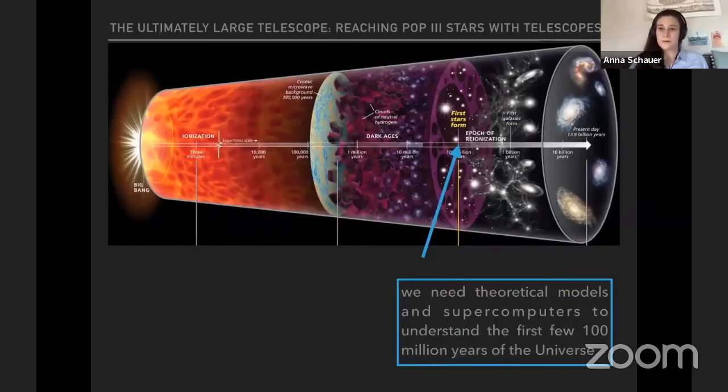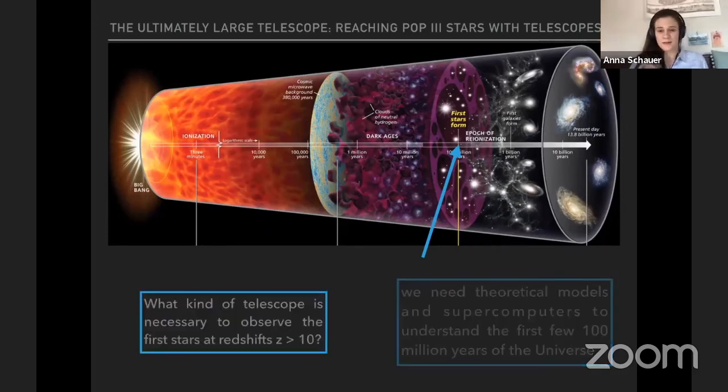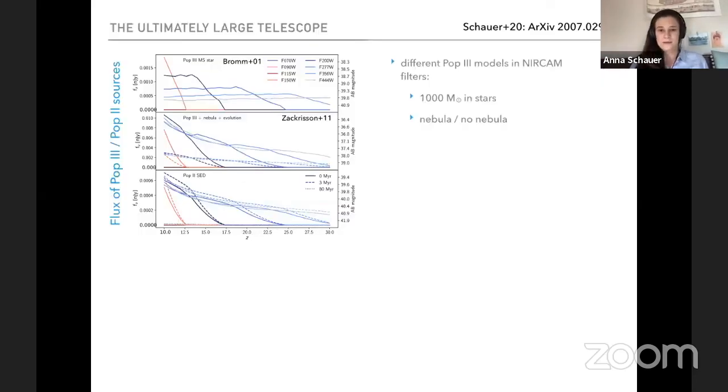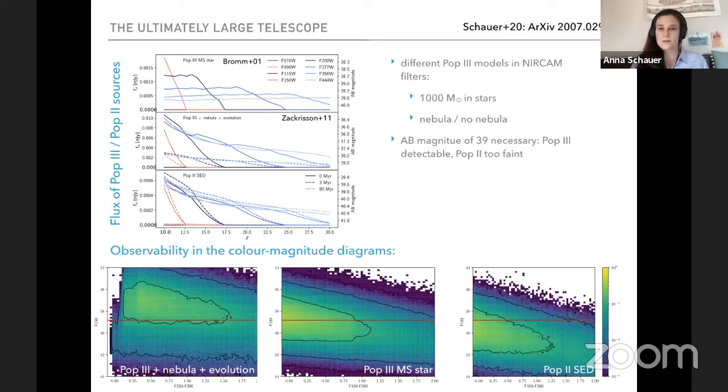As a last point, I would like to say what do we want to do when we want to move away from the supercomputers and actually observe those population three stars directly at the time that they are born? And for that, we did a fun little paper that came out yesterday on archive. We submitted it to APJ Letters. So we have here the flux of population three and population two sources with very known models from Schaerer and from Bromm 2001. And we estimate that fiducially, we have a thousand solar masses and stars. And in one of the models, we have a nebula in this one. And in this one, we don't.